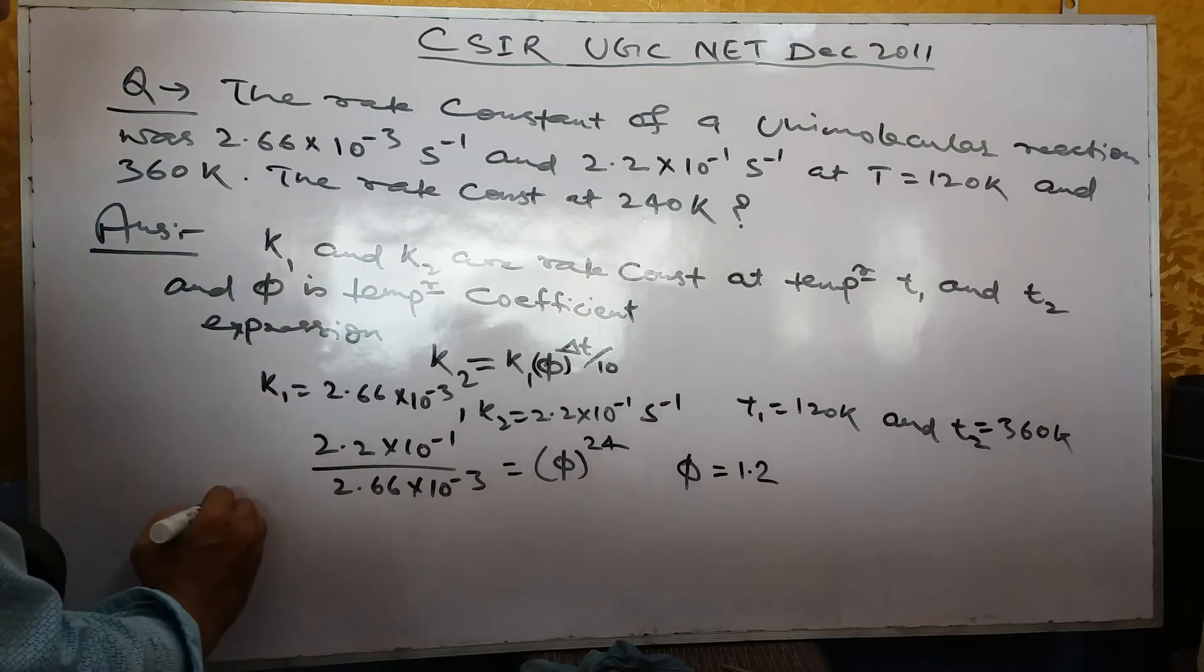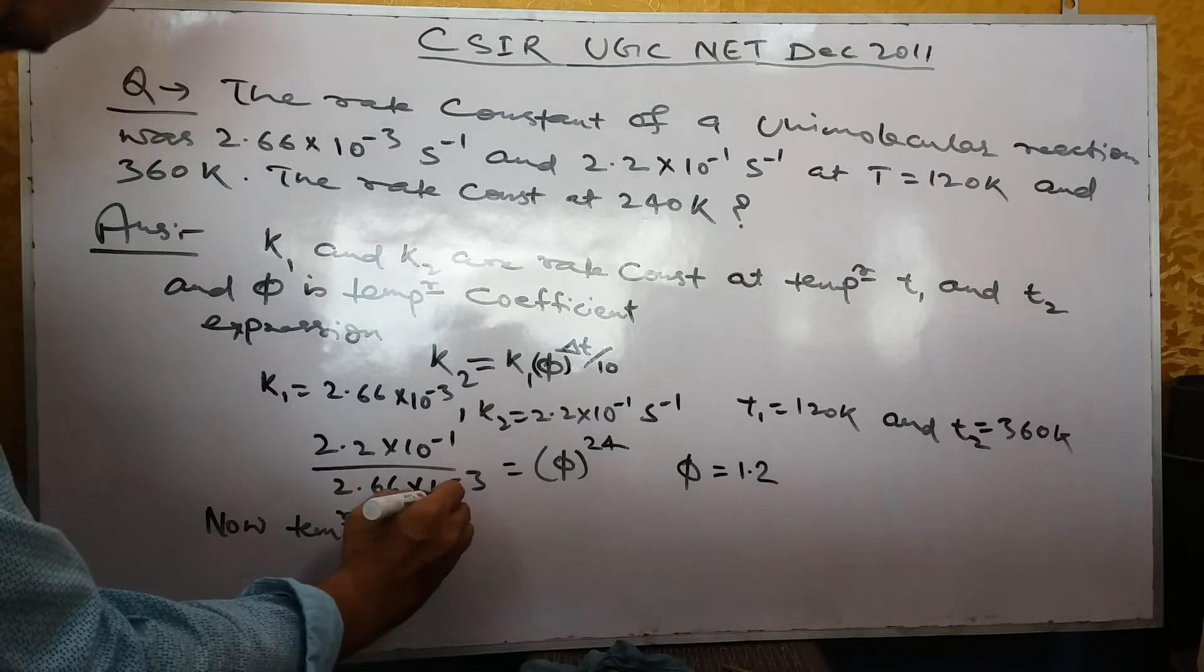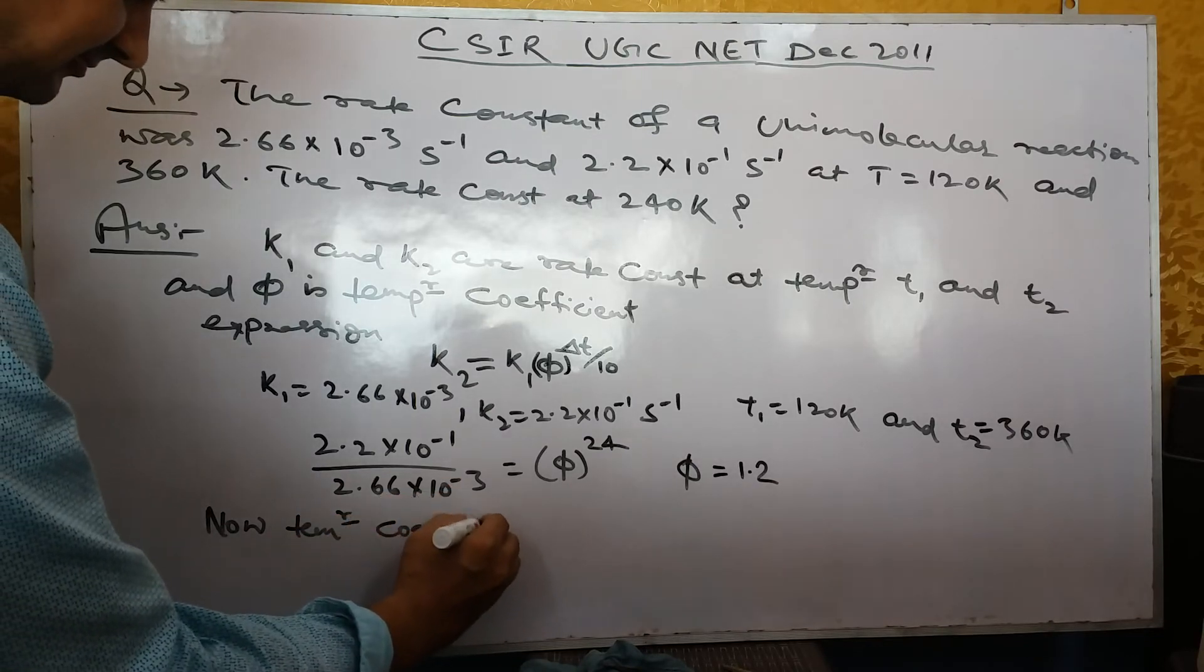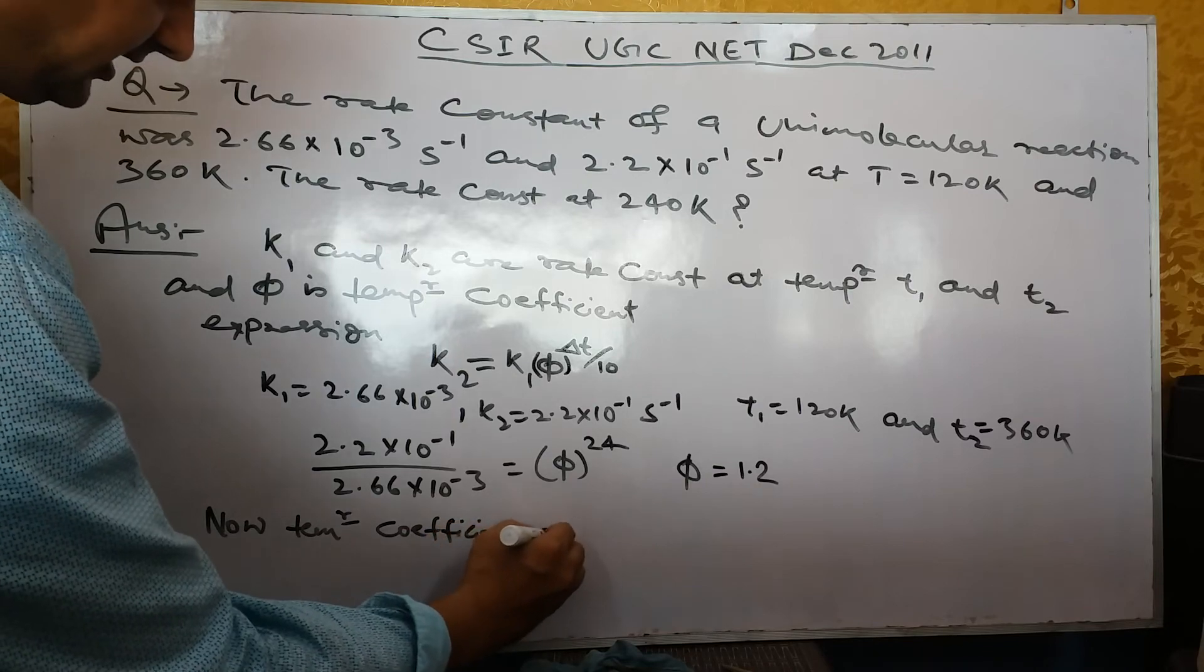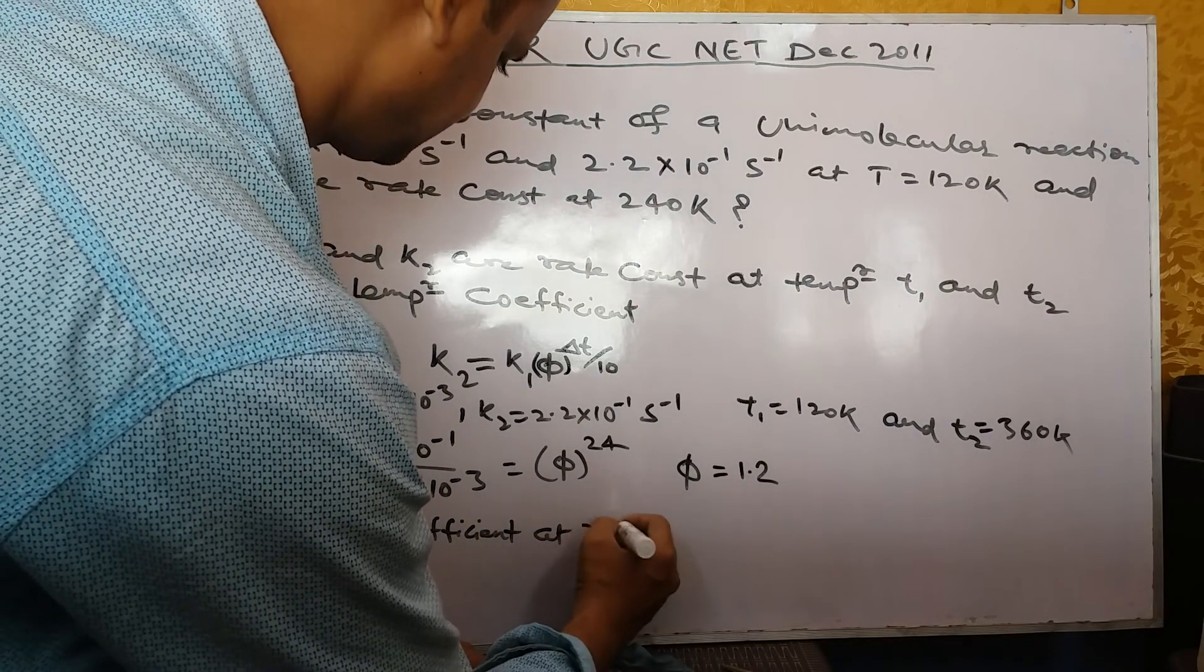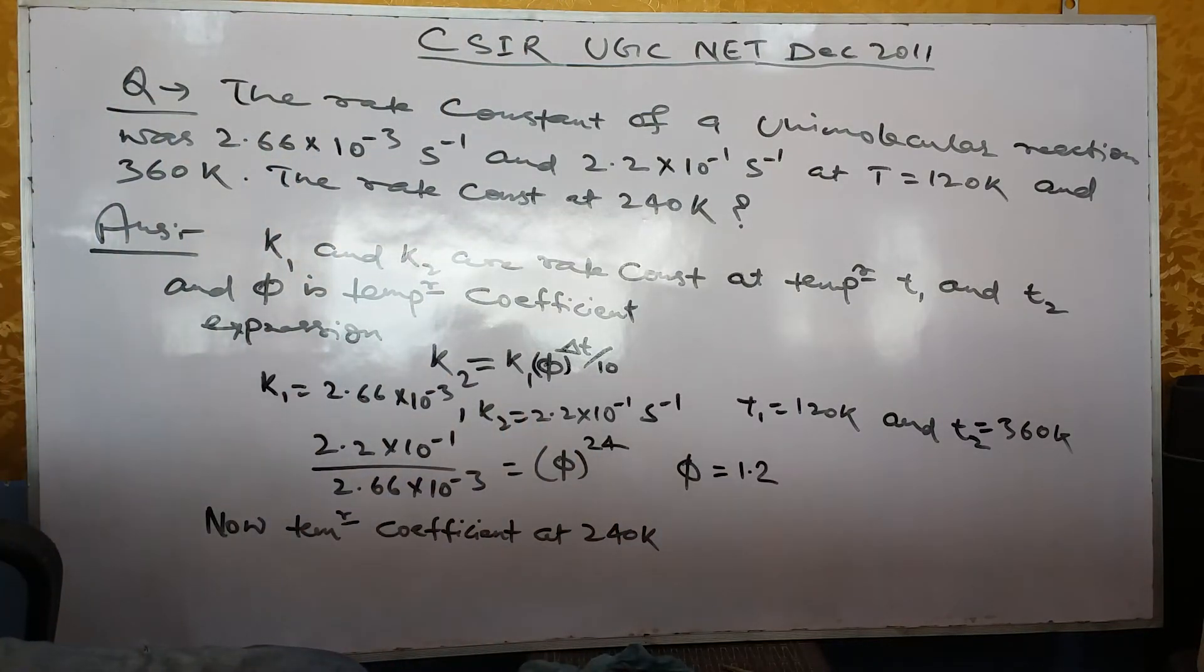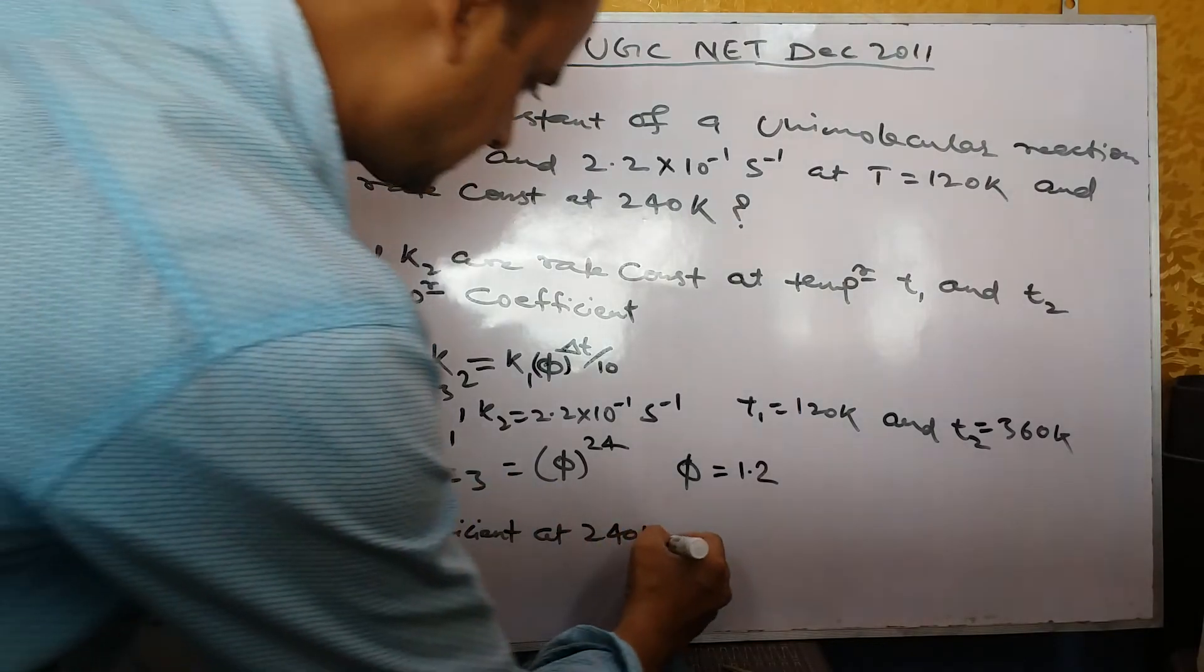Now, the temperature coefficient at 240 Kelvin. What is the rate constant K3?